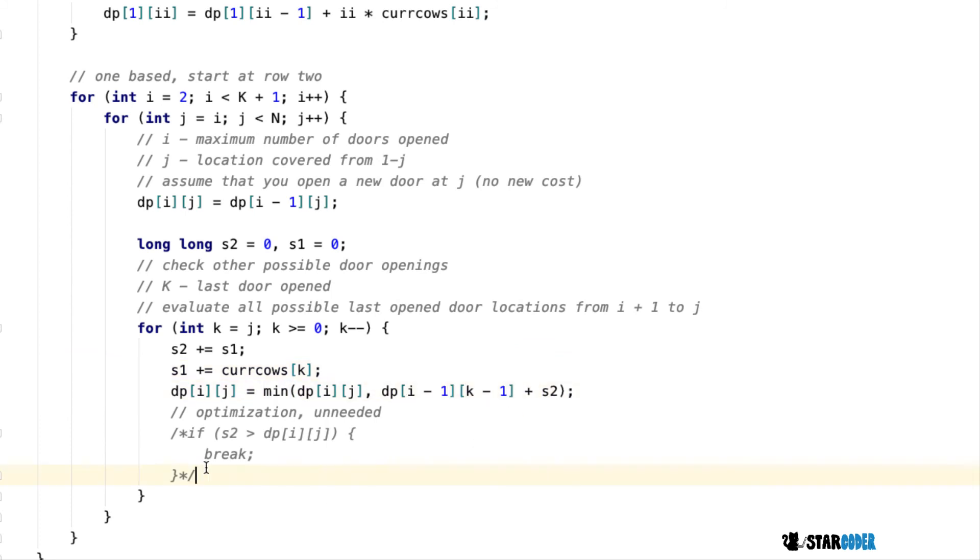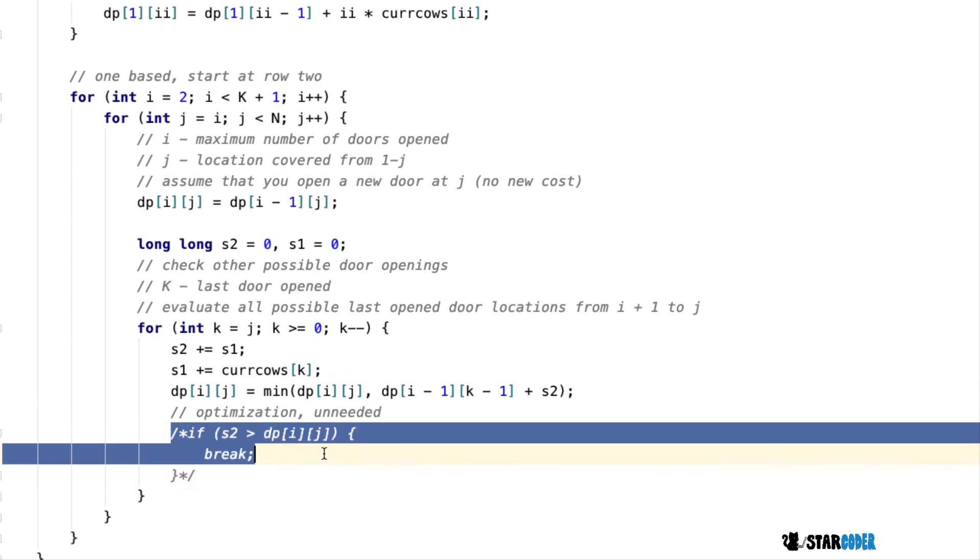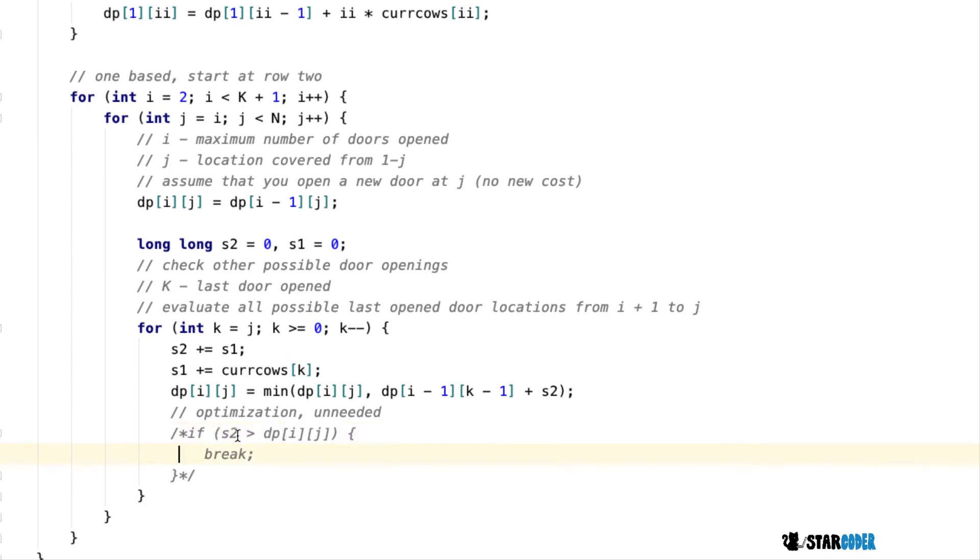Another optimization we could do is check if s2 is already greater than DP[i][j]—then we don't need to keep moving since the distance is already too big. The program still runs and passes without it, but it's something we could include.